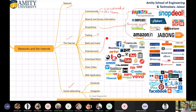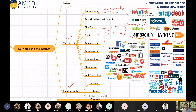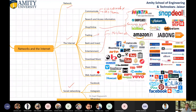Then come to entertainment. Different entertainment sites like hotstar.com and many other entertainment sites are available — YouTube and so many. For downloading music, sites are available like Gaana.com, Saavan.com, etc. Then if you want to share videos, YouTube is there, and several other platforms are also available. You can develop and upload different web applications like blogging and some other web applications.